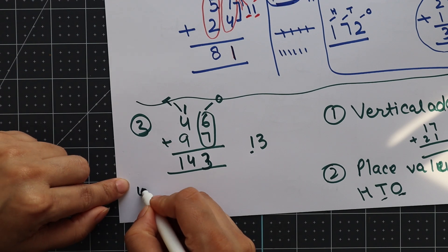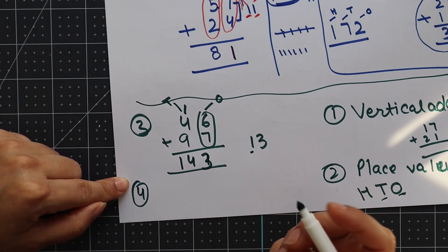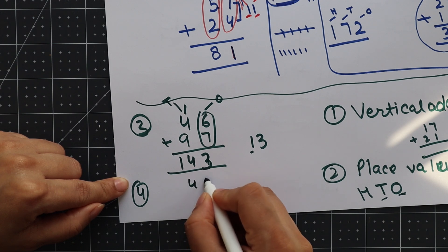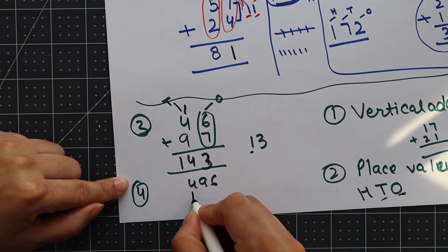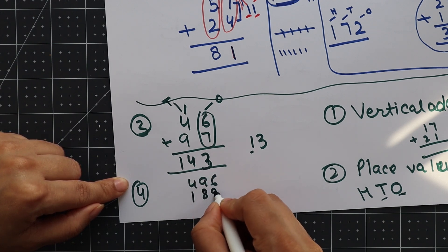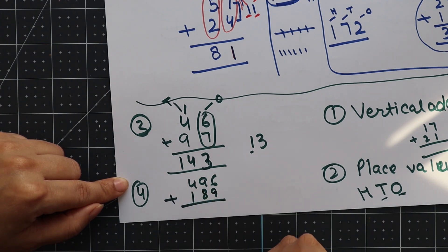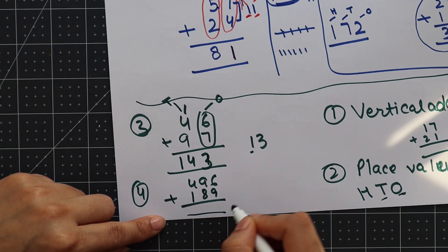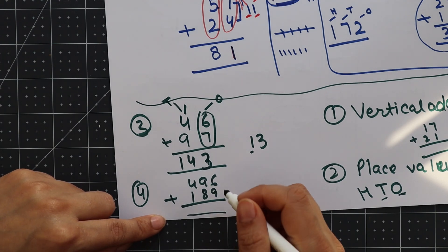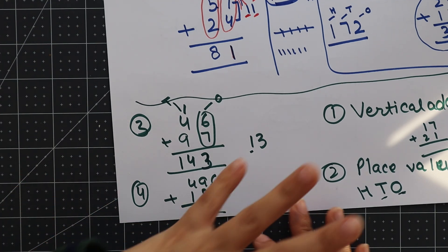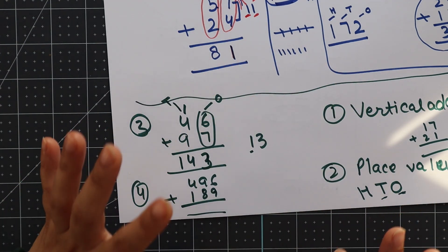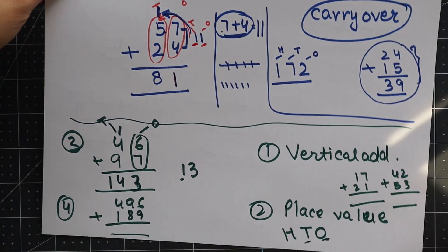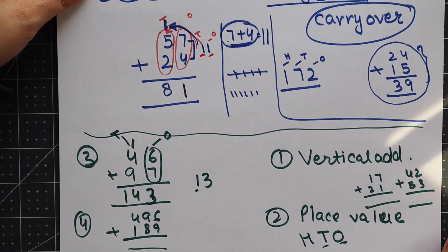After two-digit numbers, you can move on to three-digit numbers like 496 or 189. Then they will also add ones place then carry forward. In this sequence you can teach carry forward addition.